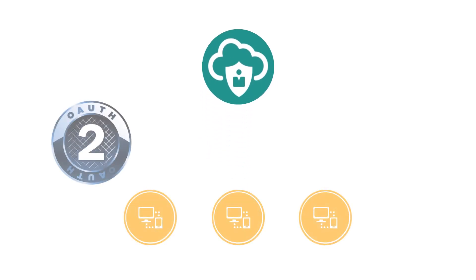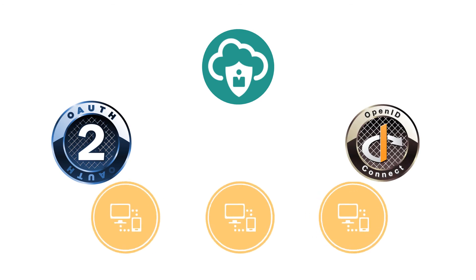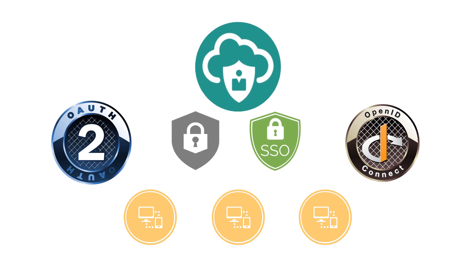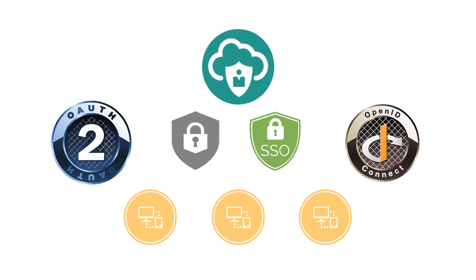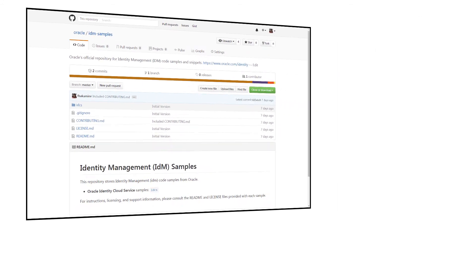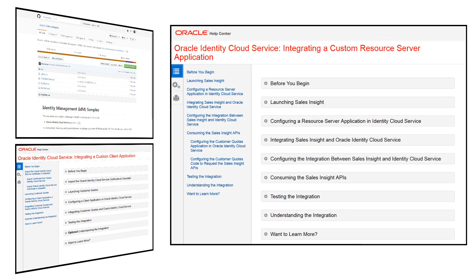With Oracle Identity Cloud Service, you can bring your applications to the cloud using OAuth 2.0 and OpenID Connect standards. Your applications don't need user data, since this data is provided by Oracle Identity Cloud Service during runtime. To learn more about these integrations, you can download the Sales Insight and Customer Quotes applications from GitHub and try our tutorials. You can also use the applications as a template to create or update your own. Thank you for watching.